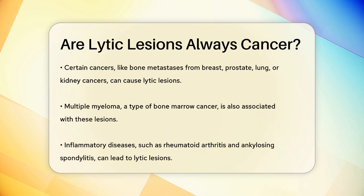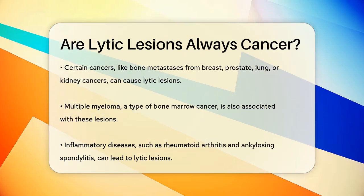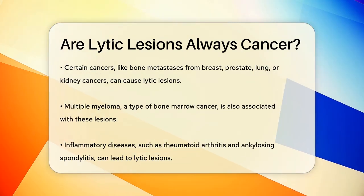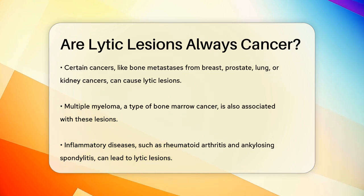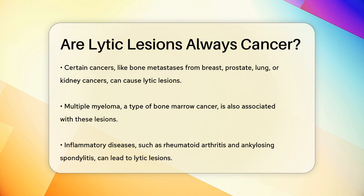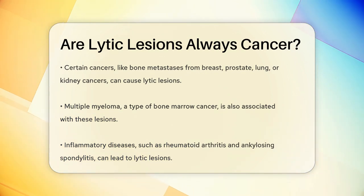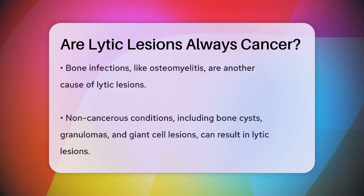For instance, inflammatory diseases like rheumatoid arthritis or ankylosing spondylitis can lead to bone destruction and lytic lesions. Bone infections, such as osteomyelitis, can also cause these lesions. Even non-cancerous conditions like bone cysts, granulomas, or giant cell lesions can result in lytic lesions.